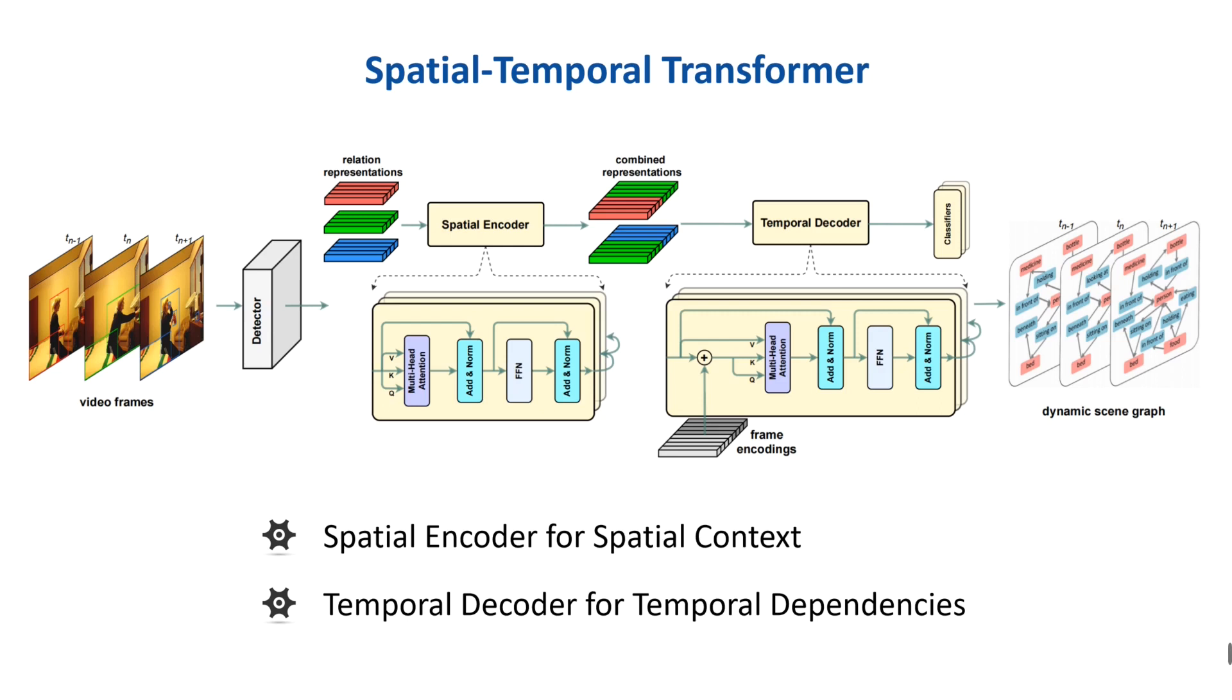And the temporal decoder which takes the output of the spatial encoder as input in order to capture the temporal dependencies between frames. Different from the original transformer, the self-attention layer of our temporal decoder is identical to the spatial encoder.